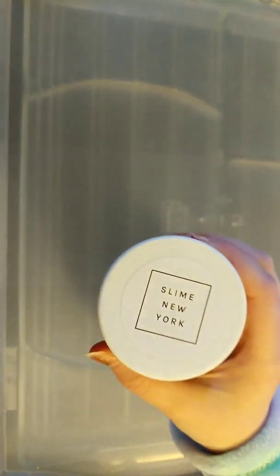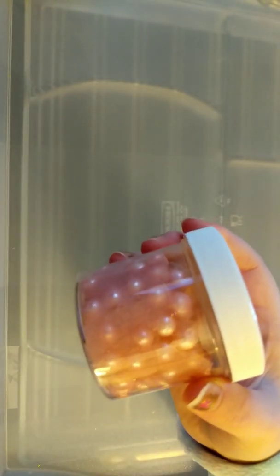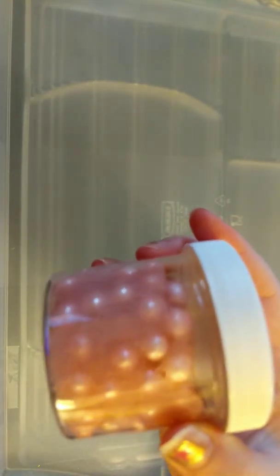Alright. This next one, it's a smaller jar of it. Here it is. And, you can see there are these little pearls in it. And then, it's clear with a hint of pink inside. And, it's called Pearl Crunch.